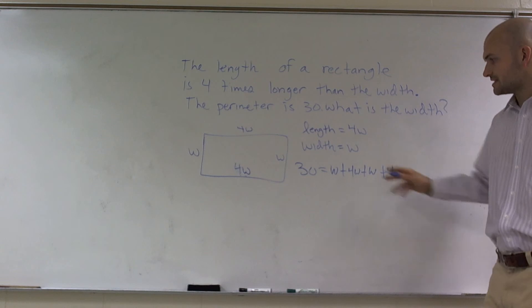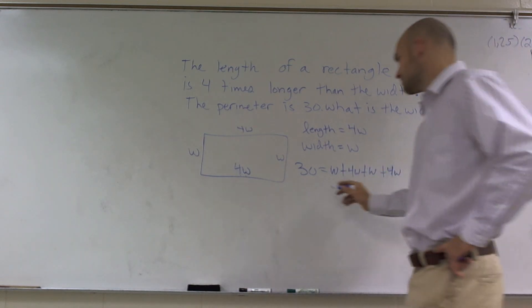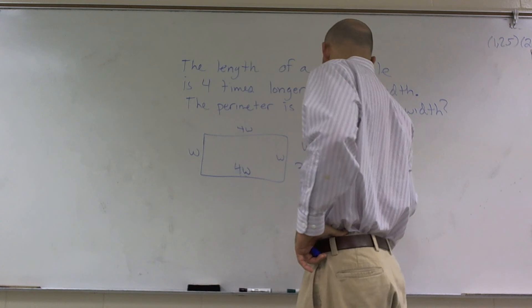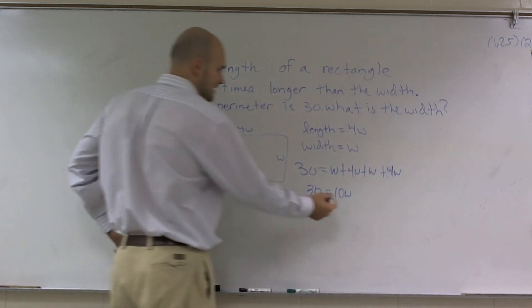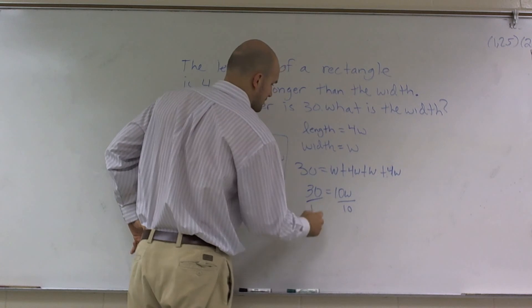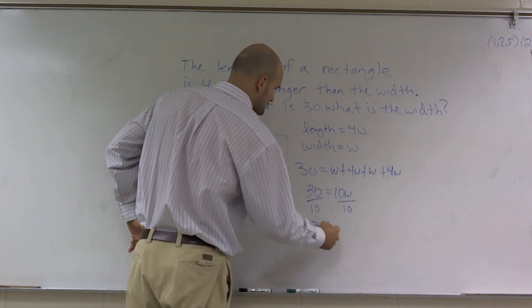So now what you can see is you can add all those up, and that's going to give me 10w. So you could say 30 equals 10w. Then I divide by 10, and what I get is 3 is equal to w.